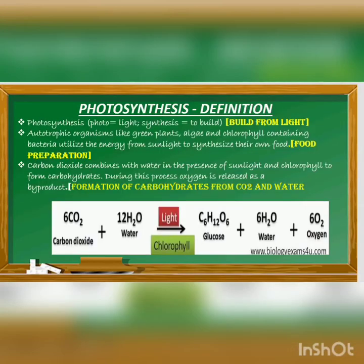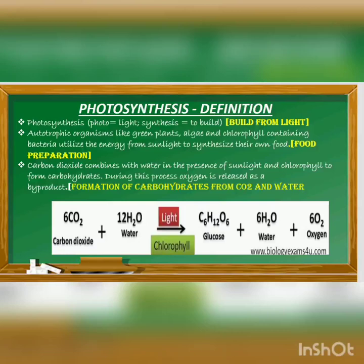Let's define photosynthesis. There are three terms to define it. The first one is 'build from light.' The second one is 'food preparation.' The third one is 'formation of carbohydrate from carbon dioxide and water using sunlight as energy.' The photo in the word photosynthesis means light, and synthesis means to build — so 'build from light' is one definition.